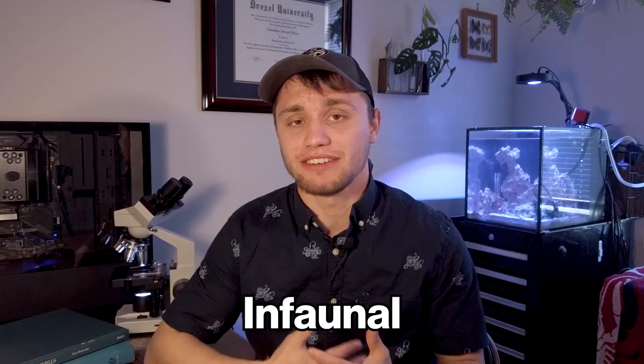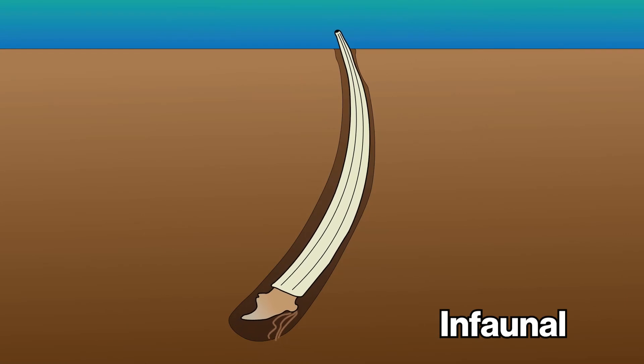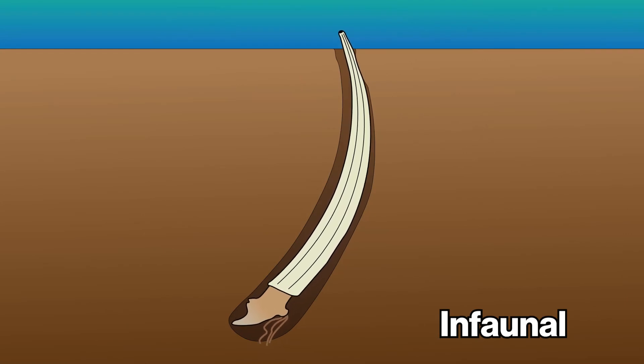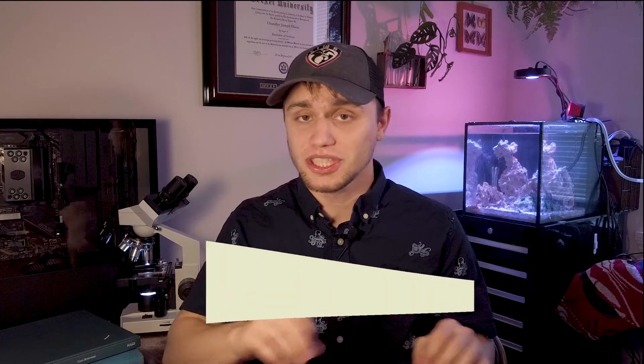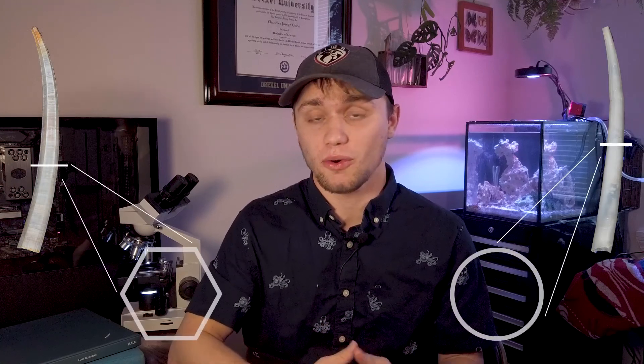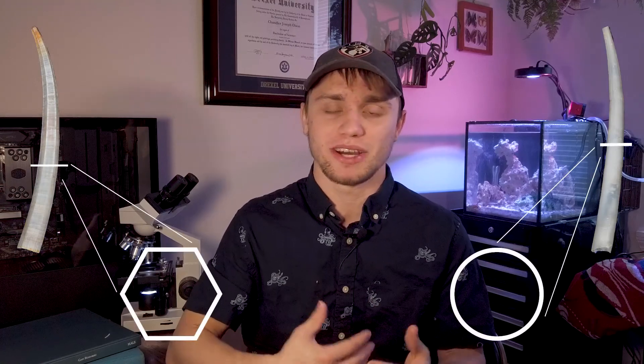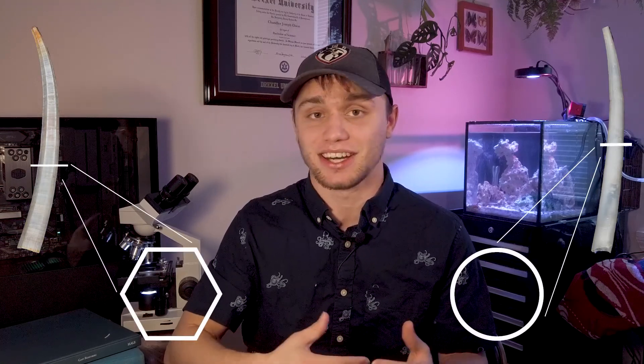Almost all known tusk shells are infaunal animals. This means that they spend most of their life buried in soft substrates like sand and mud. Scaphopods have a tube-shaped shell, usually with one larger opening and one smaller opening. This tube shape can be perfectly round or it can be more geometric like a hexagon.